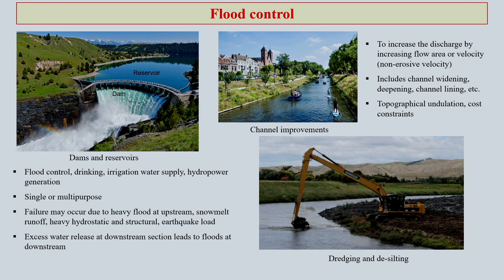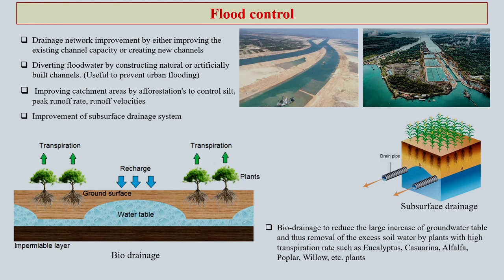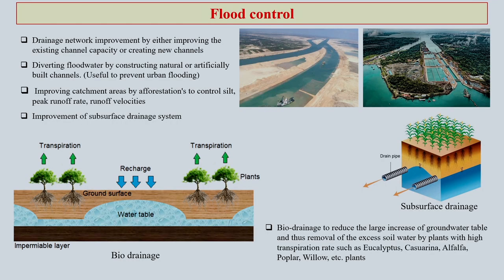There are various other options also for flood control. These are reservoirs, dams, channel improvements, dredging and desilting — all of which are very common. These days, bio-mitigation is coming forward heavily, focusing on how you can utilize different plant species and create a bio-drainage system so that the drainage network can work in an appropriate manner. You can do this either by improving the existing channel capacity or creating new channels, or by diverting flood water by constructing natural or artificially built channels.